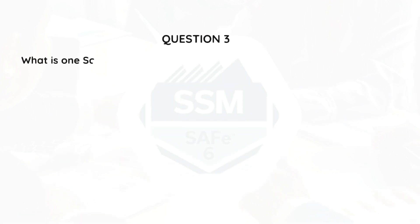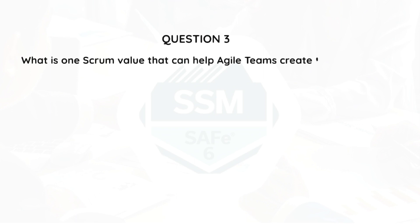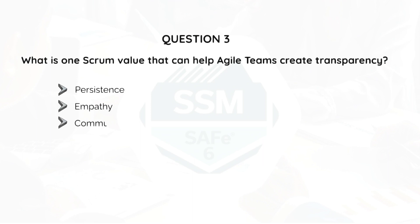Question 3. What is one Scrum value that can help Agile teams create transparency? Persistence, Empathy, Communication, or Respect?